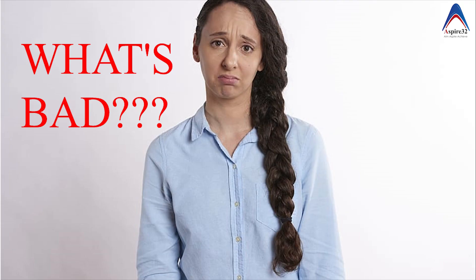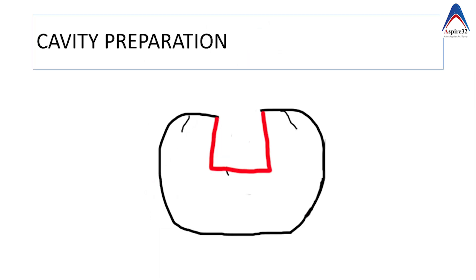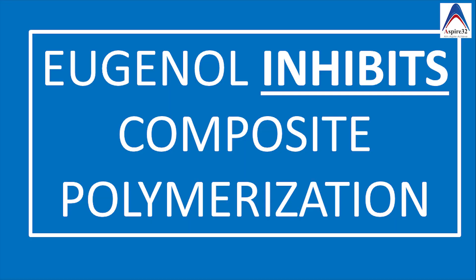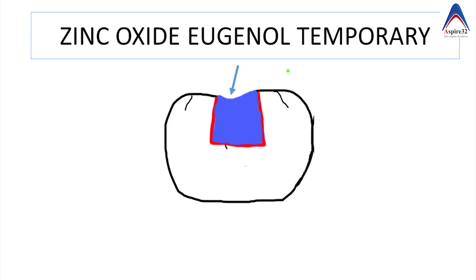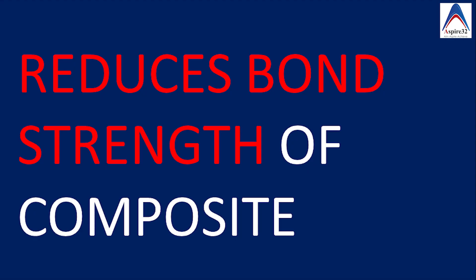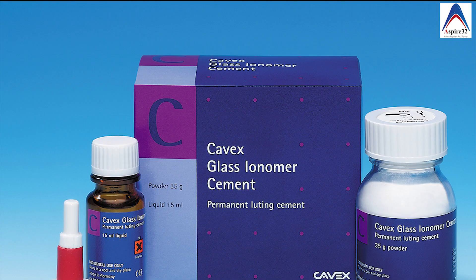Zinc oxide eugenol cement has a negative effect on composite restorations. First, if used as a base below composite, ZOE will prevent curing of the composite — so it is contraindicated as a base below composite restorations. Second, if used as a temporary material and then removed, residual eugenol remaining in the tooth will prevent the composite or bonding agent from achieving high bond strength. The recommendation is to use glass ionomer cement as a temporary restoration before placing composite.